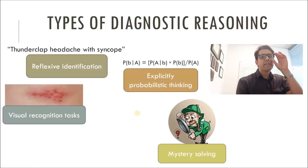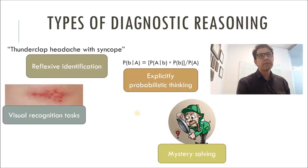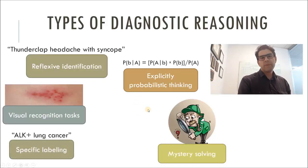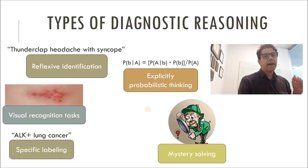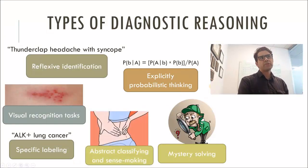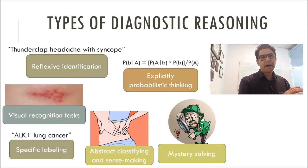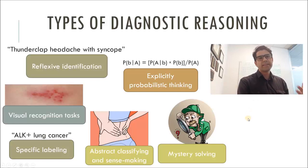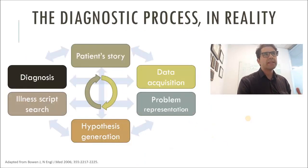Then we have explicitly probabilistic thinking — exemplified when somebody comes in with suspected pulmonary embolism and you put them into a standardized, validated risk calculation score to help guide clinical decisions. We also have specific labeling: a diagnosis of ALK-positive lung cancer is important not only diagnostically but therapeutically, so we want very specific labeling to guide therapeutic decision making. On the other hand, sometimes we're left with abstract classifying and sense making. Somebody comes in with nonspecific low back pain, and the process is figuring out whether this is back pain with alarm symptoms or not — not necessarily assigning a label, just determining if it's serious.